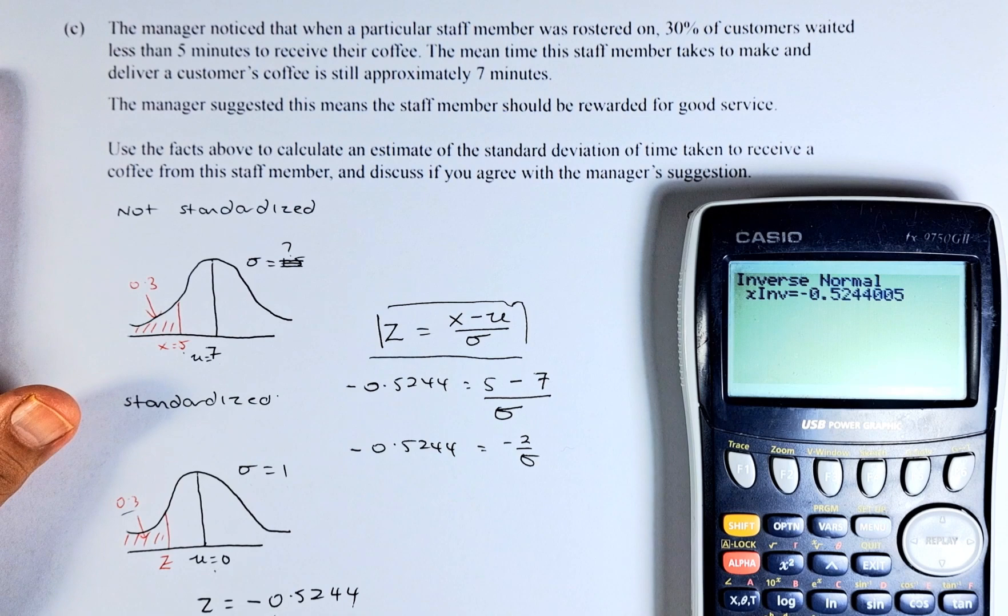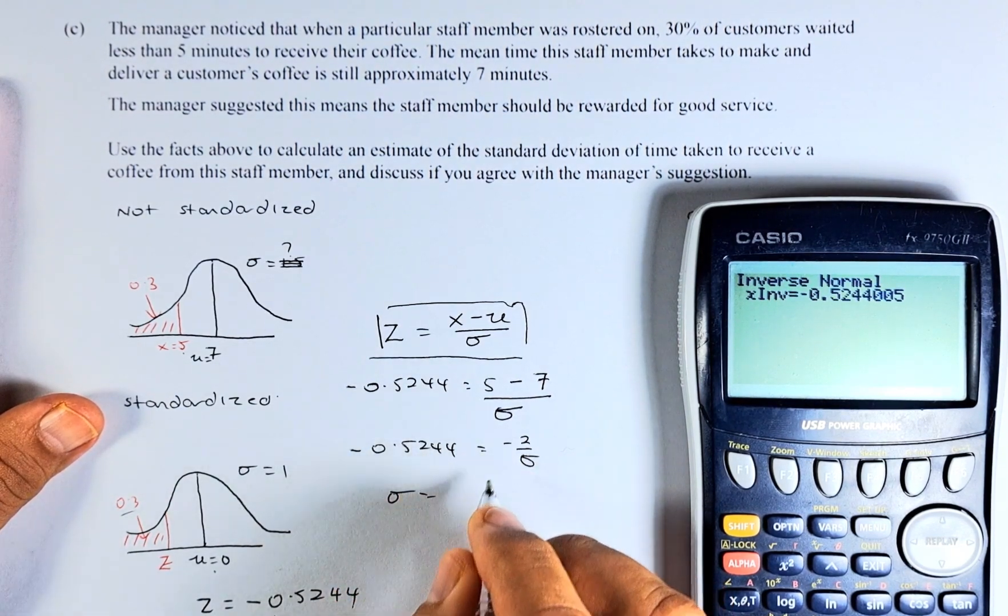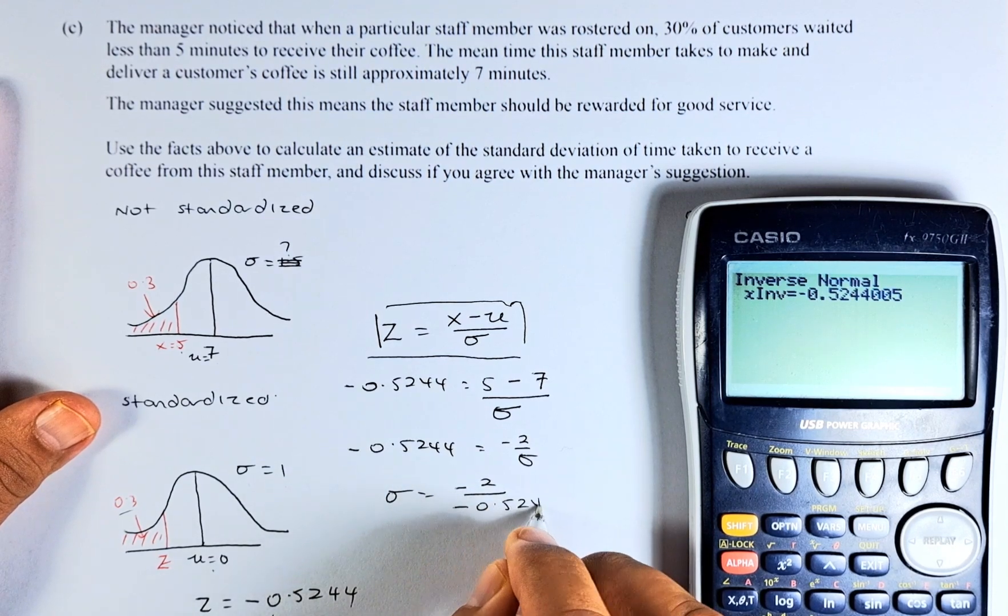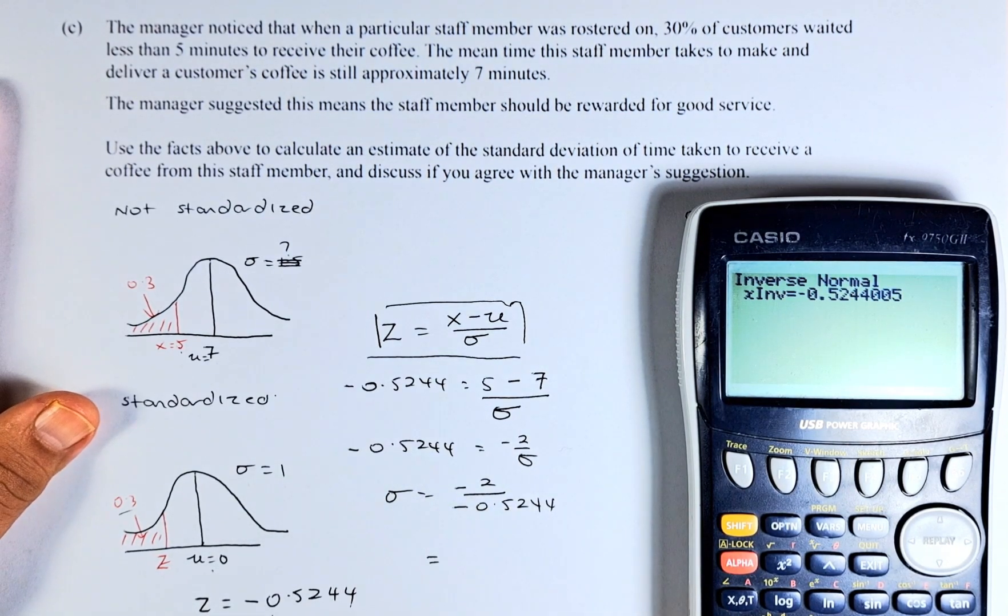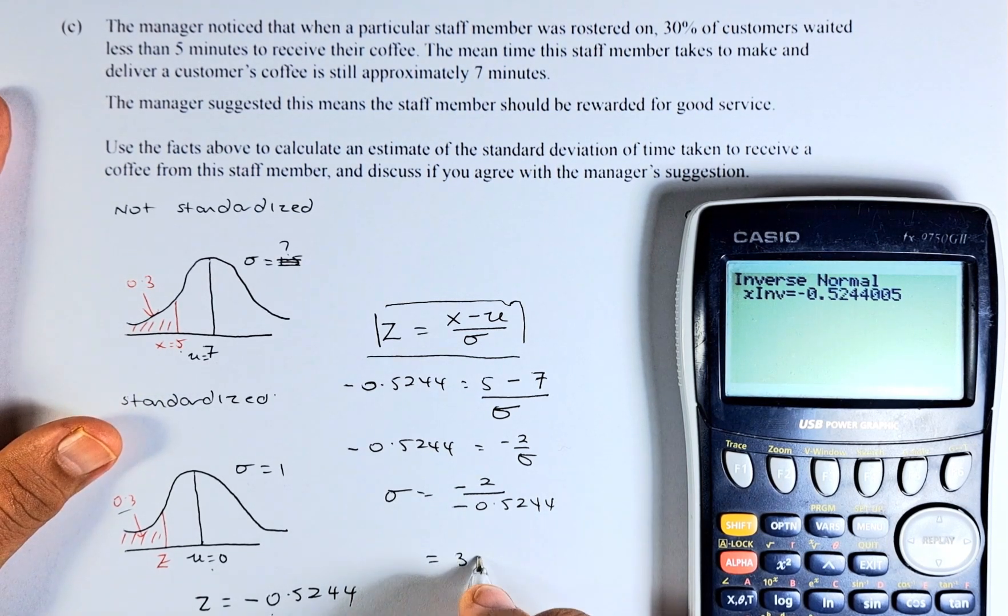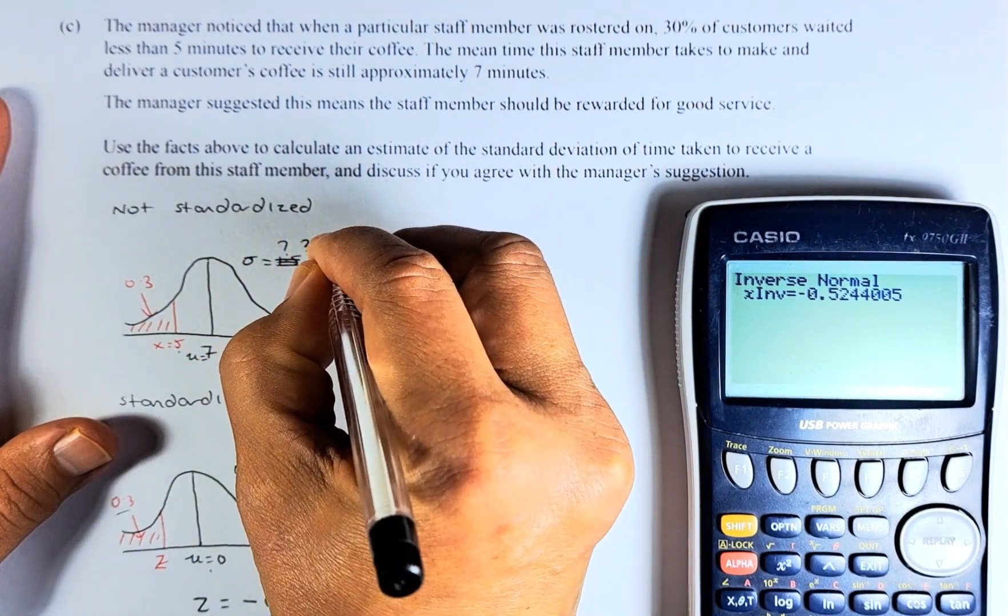So now to calculate your sigma, it's very simple. Sigma is just going to be, you swap over, it's going to be negative 2 over negative 0.5244. Put in your calculator. It's going to be 3.814. So that will be your sigma equal to 3.814.